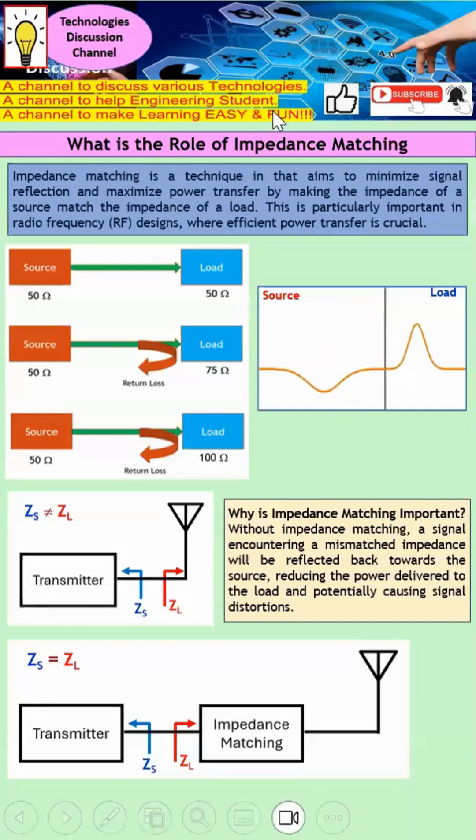I'd like to explain the role of impedance matching. Impedance matching is a technique that aims to minimize signal reflection as much as possible. With this case, we actually have maximum power transfer. This is possible because we make the impedance of the source match the impedance of a load. This is particularly important in RF design where efficient power transfer is critical.